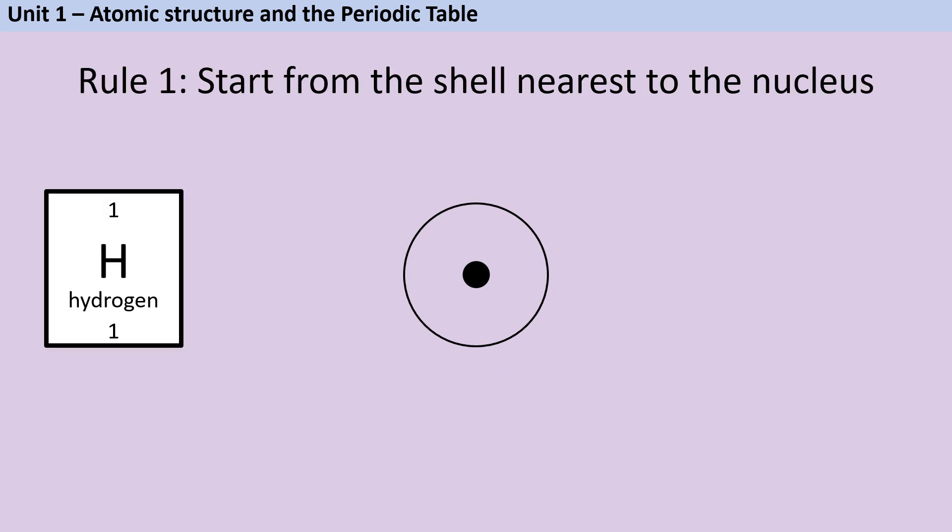To find out how many electrons any particular atom has we can look at the atomic number, which is going to be the lower of the two numbers on the AQA GCSE Chemistry Periodic Table, but for any periodic table it will be the smaller of the two numbers. We're going to start with the first element hydrogen, and as you can see here hydrogen actually has the same atomic number as mass number.